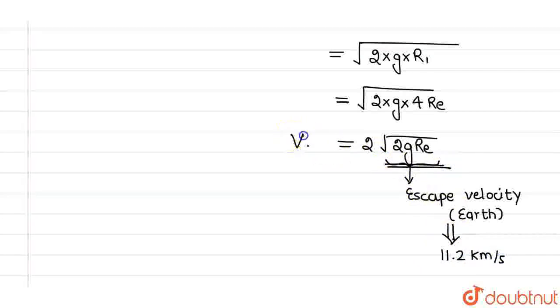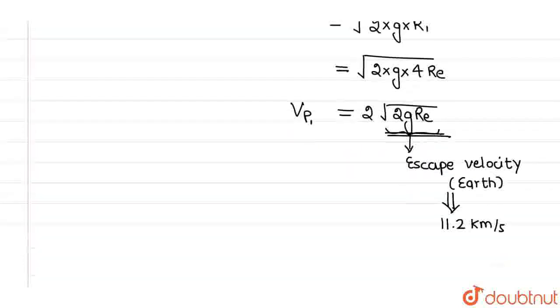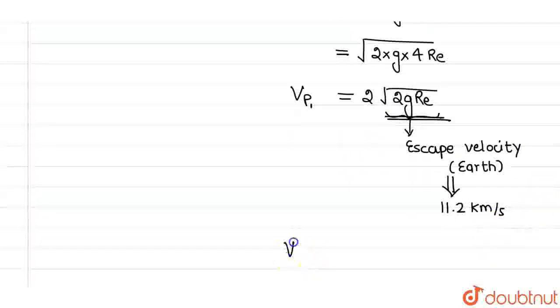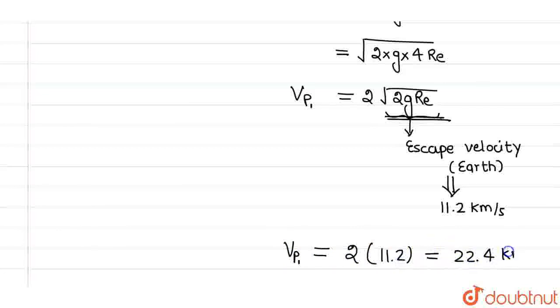Now, since the escape velocity for planet 1 is nothing but 2 times root over 2gRe, escape velocity for planet 1 will be equals to 2 times 11.2 km per second, which comes out to be 22.4 km per second.